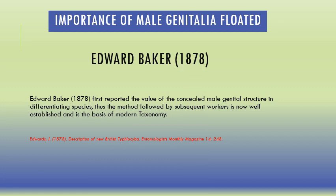Regarding the importance of male genitalia: it was Edward Baker in 1878, while studying Typhlocyba, who found that several insects appeared externally similar, but when he dissected them he found they were all different. He concluded that the male genital part is very important in the separation of species. This rule was followed by subsequent authors and is now the basis of modern taxonomy.